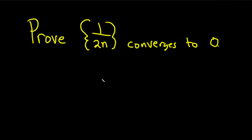In this video we're going to prove that the sequence 1 over 2n converges to 0. First we need to recall the definition of convergence.